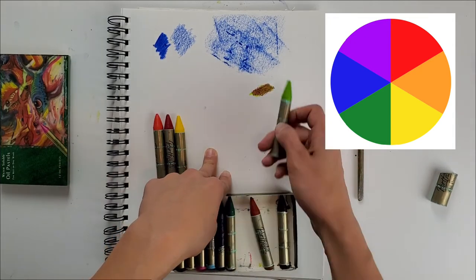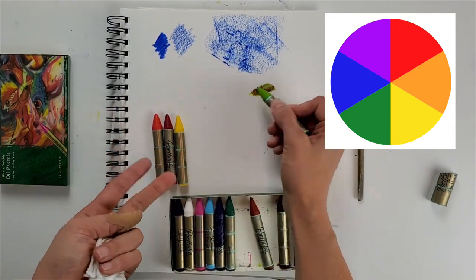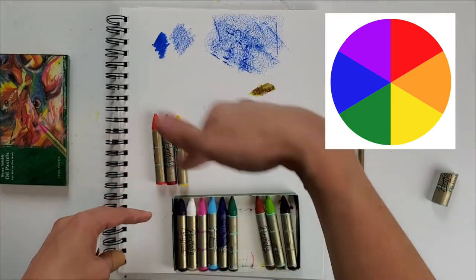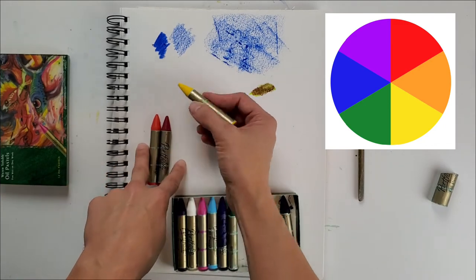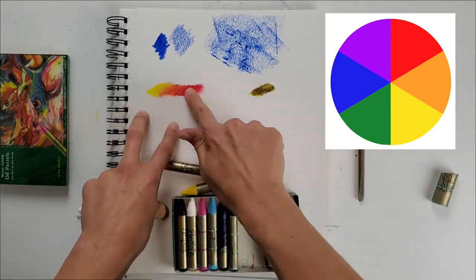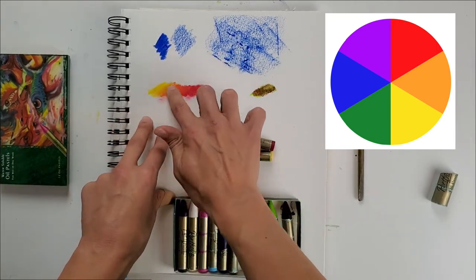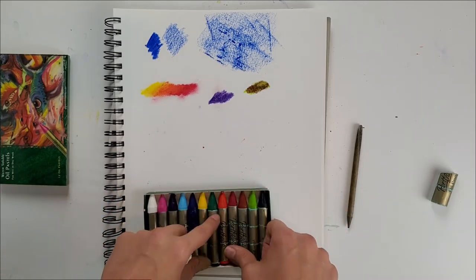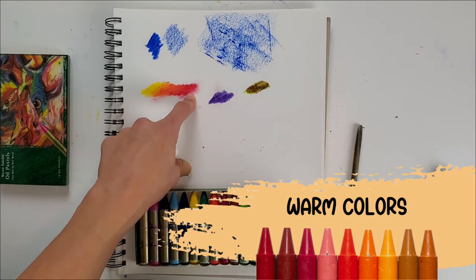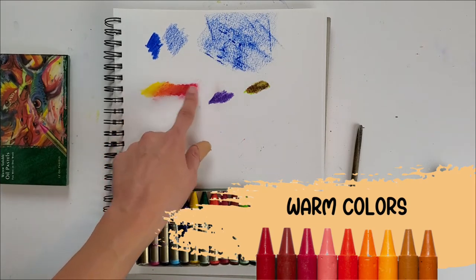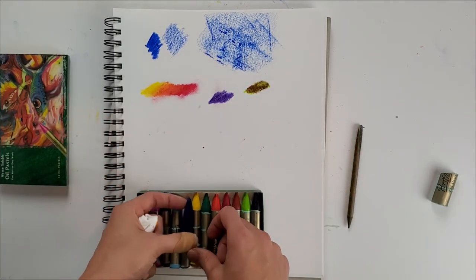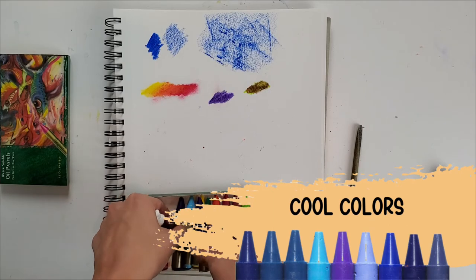Maybe that's what you're going for, otherwise if you're looking for some great colors to blend, stick to the colors that are next to each other on the color wheel. One way to think about this is using warm colors or cool colors to mix. Here are my warm colors, my reds, oranges and yellows, and those colors mix really well together. The same thing with cool colors, so cool colors are your blues, greens and purples.